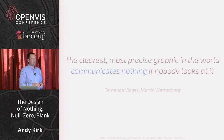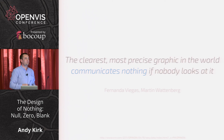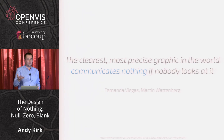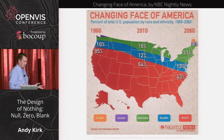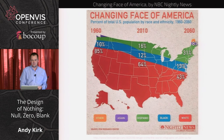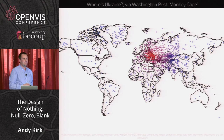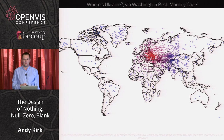As Fernando Viegas and Martin Wattenberg put it: 'The clearest, most precise graphic in the world communicates nothing if nobody looks at it.' There is sometimes a requirement to seduce people, to convince them to look — otherwise no one will see the insights. Conversely, far too often we see things where there is nothing to take away. And sometimes data reveals that people know precisely nothing — like a map of where Americans think Ukraine is located.